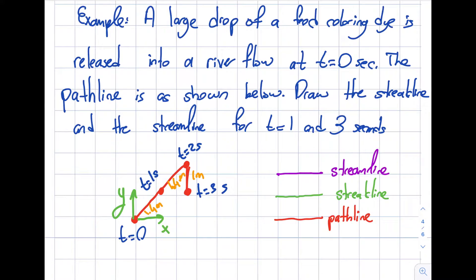Draw the streak lines and the streamlines for two particular times: t equals one and t equals three. I gave a hint to myself - I will distinguish them by different colors. Streamlines I will draw with purple, streak lines with green, and path lines as the figure indicates are red.